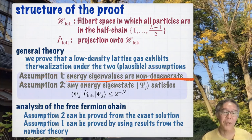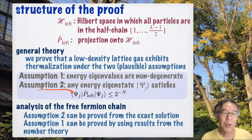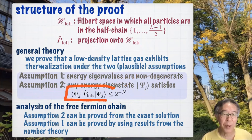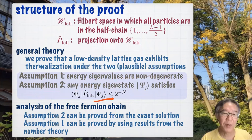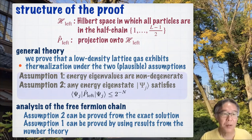Assumption number one is that energy eigenvalues are non-degenerate. We believe that a sufficiently complex non-integrable quantum system has no degeneracy — this is very plausible, but in general very hard to prove. Assumption number two is also very plausible: for any energy eigenstate |ψJ⟩, the inequality ⟨ψJ|P_left|ψJ⟩ ≤ 2⁻ᴺ is valid. This is the probability of finding all particles in the left half of the chain — a very rare event, so the upper bound by 2⁻ᴺ is very plausible. If you could justify these two assumptions, our general theory applies.